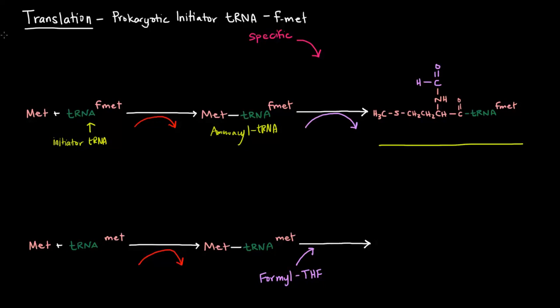Now, that reaction is catalyzed by a methionine tRNA synthetase. That's the aminoacyl tRNA synthetase, and it's specific for this reaction. And of course that requires ATP going to AMP and pyrophosphate, so the equivalent of two high energy phosphate bonds. So then we have this methionine connected to a tRNA that's specific for formylated methionine.